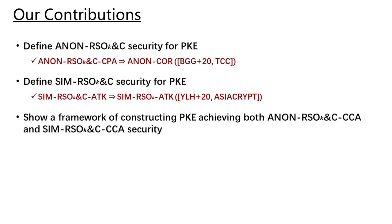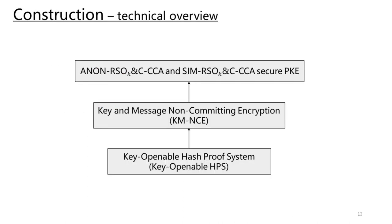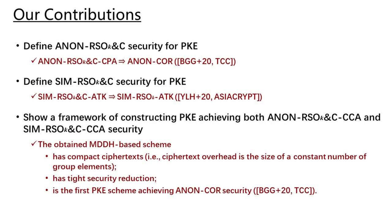For constructions, we show a framework for constructing PKE achieving both anonymous RSO-K&C CCA security and confidentiality under the same types of corruptions. Specifically, we propose a primitive called key and message non-committing encryption (KMNCE), and use it to construct a PKE scheme achieving both of the two new security requirements. We then use a new primitive called key-openable hash proof system to construct KMNCE. The resulting MDDH-based PKE scheme has compact ciphertexts and tight security reduction, and is the first PKE scheme achieving anonymous COR security.